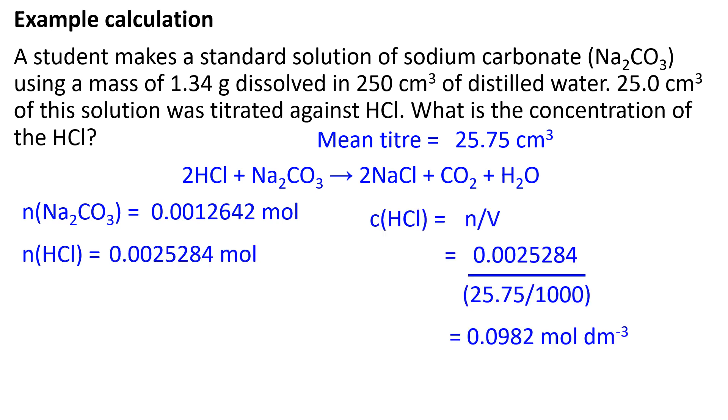Finally, we work out the concentration of HCl using amount divided by volume. The volume of HCl required for neutralisation is the average titer. This works out to be 0.0982 moles per decimeter cubed.